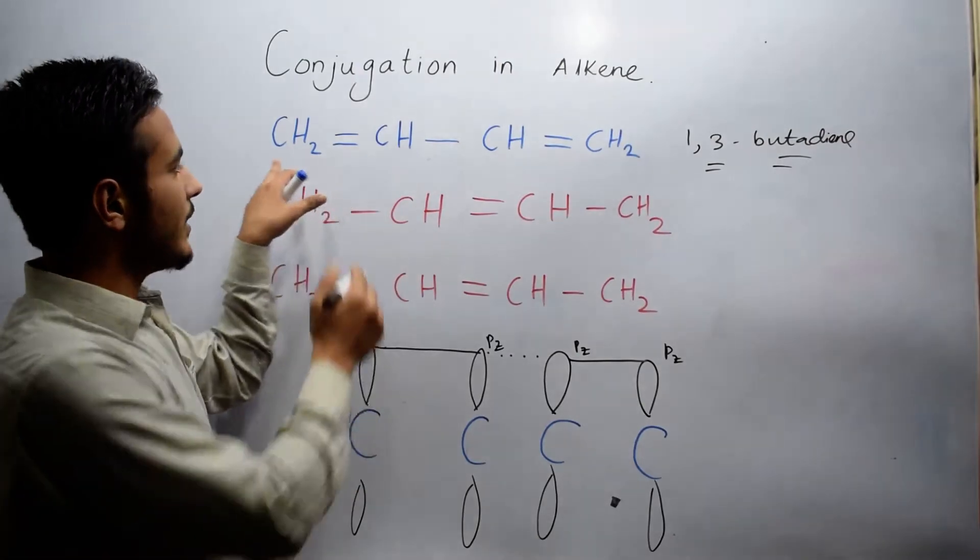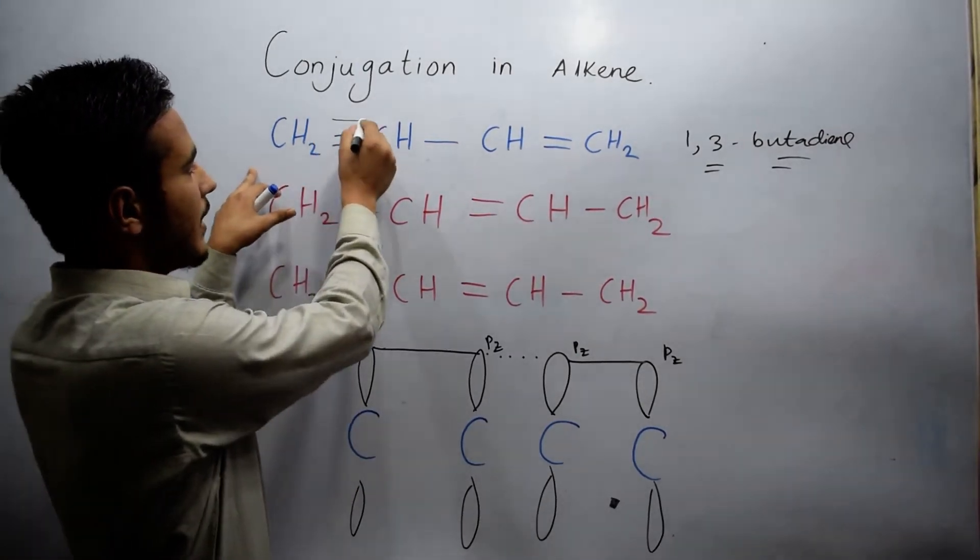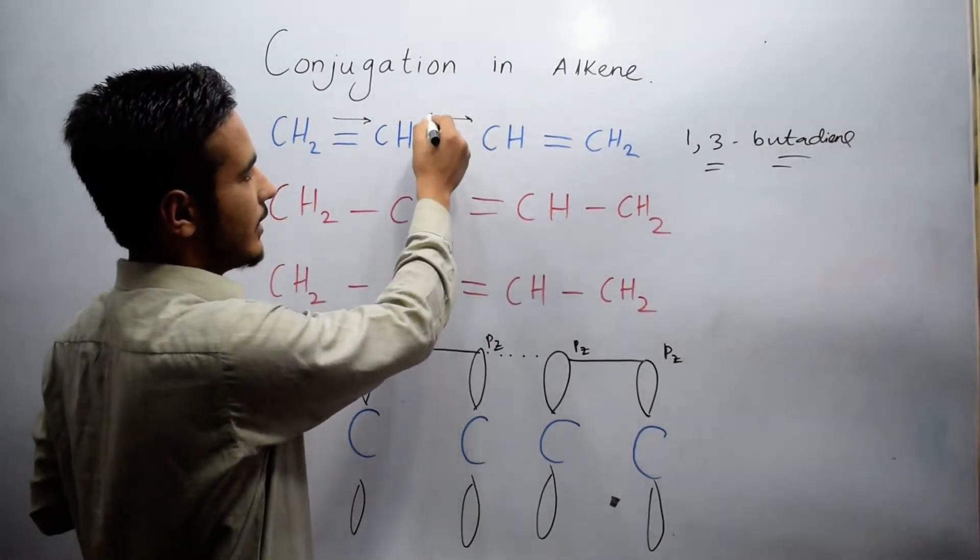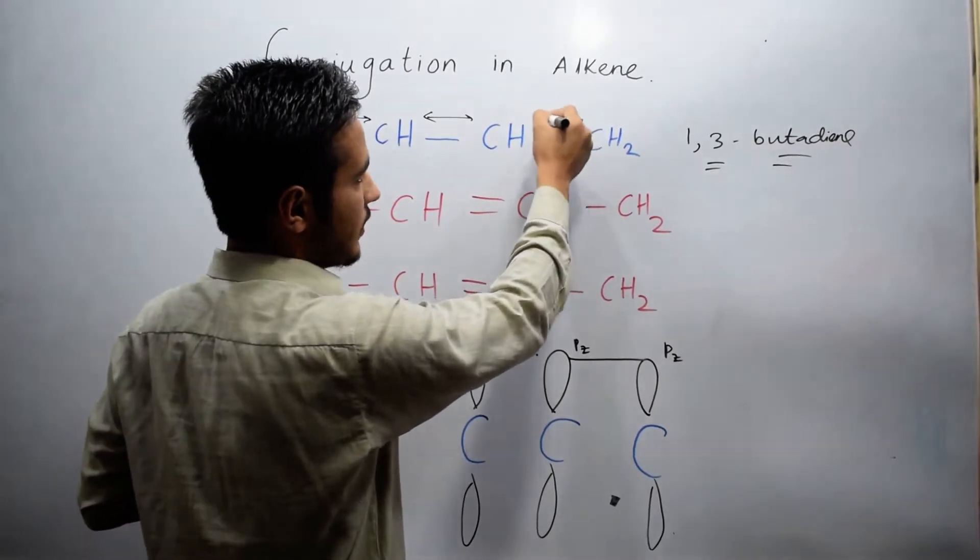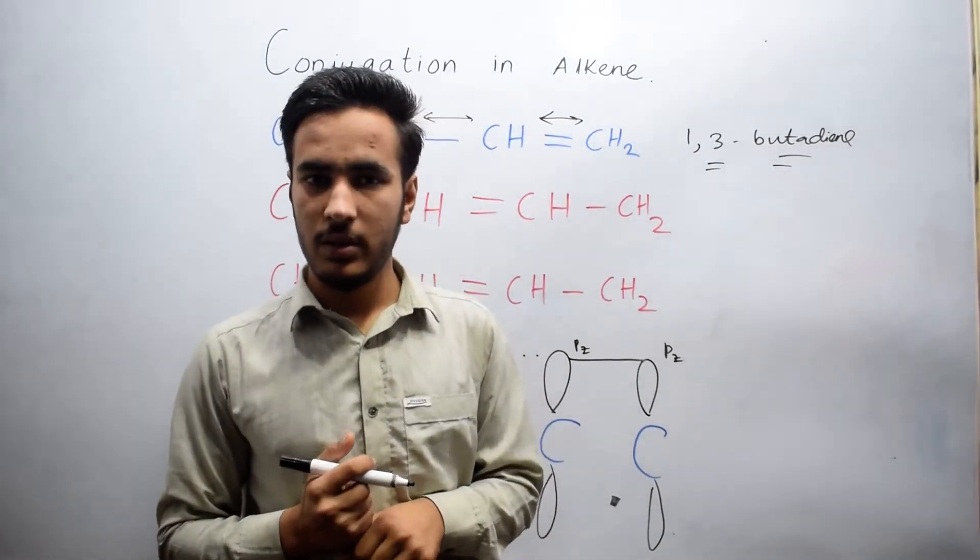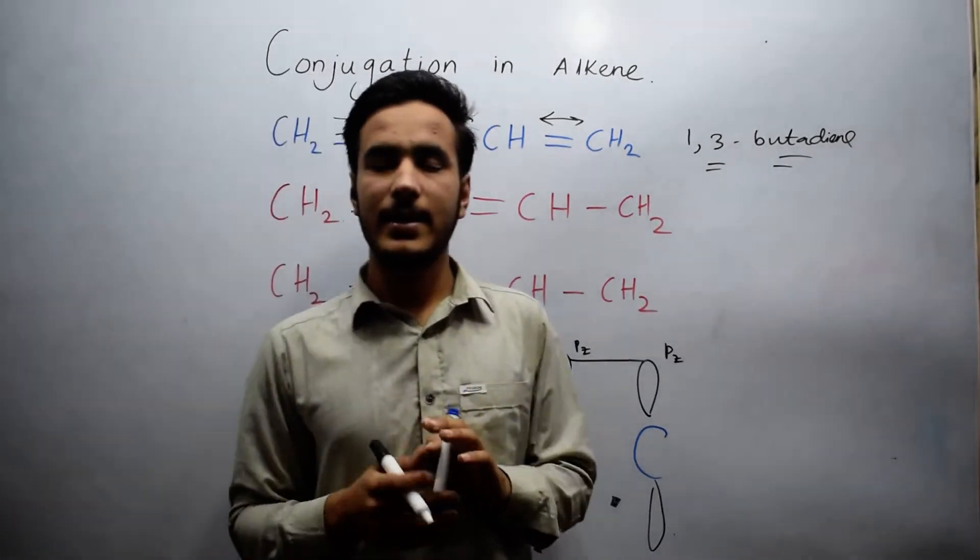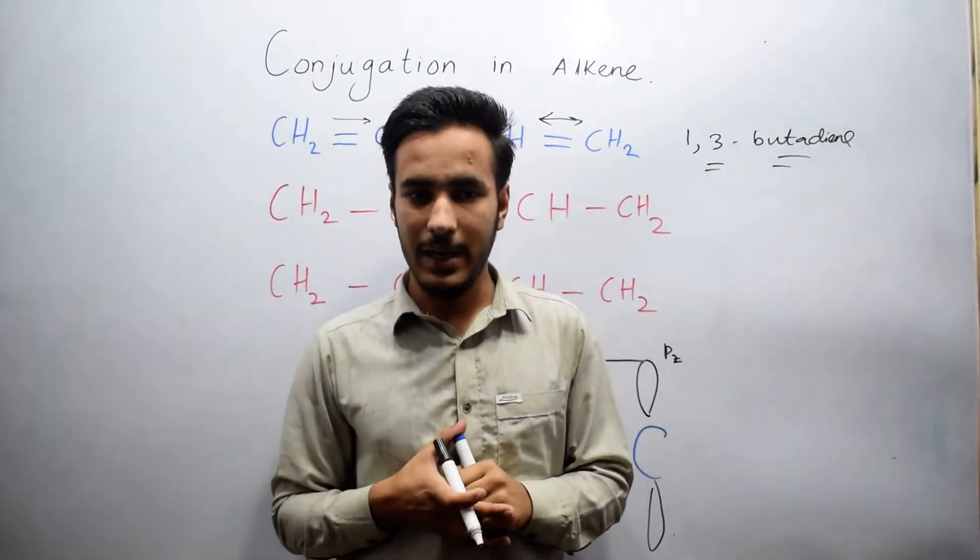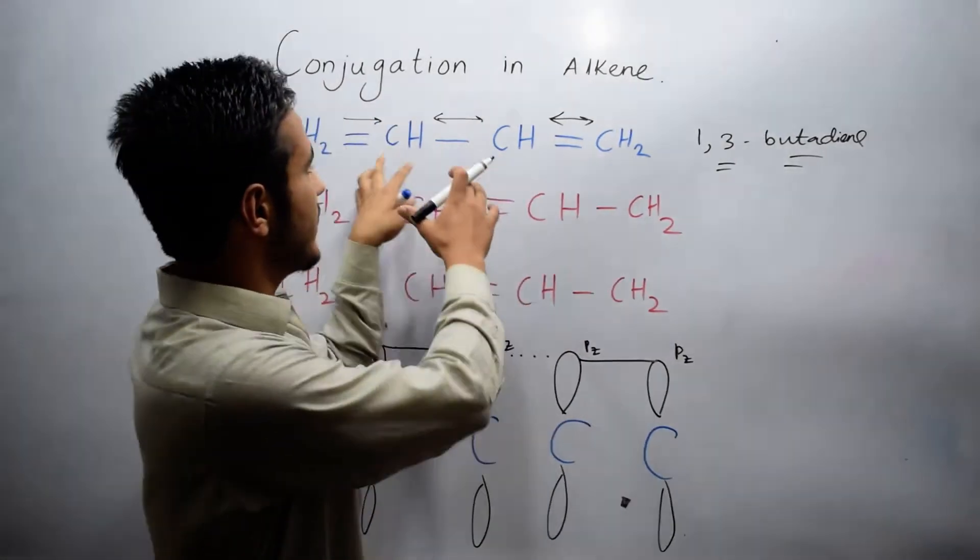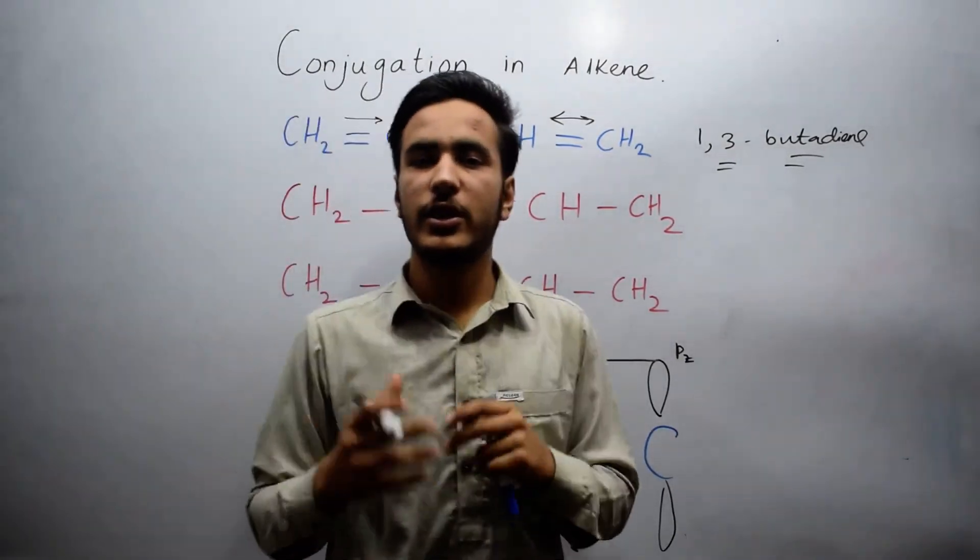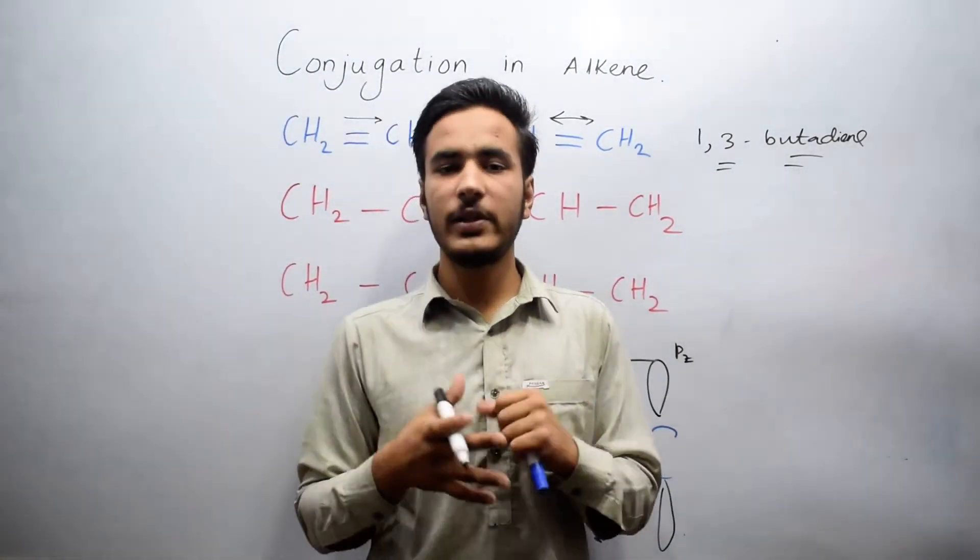Here, carbon and carbon are linked by double bond, then single bond, then double bond, so this compound is a conjugated compound. In a double bond, one bond is a sigma bond and the other is a pi bond. The pi bond will change its location.